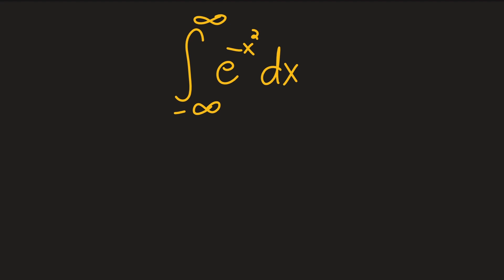To begin, what we're going to do is actually just change the bounds a little bit. We're going to note that this is an even function, and say this is now two times the integral from zero to infinity of e to the minus x squared dx — this is just the exact same thing as the original.